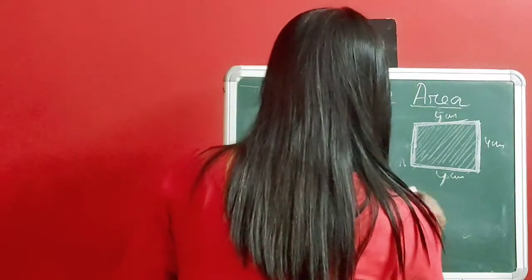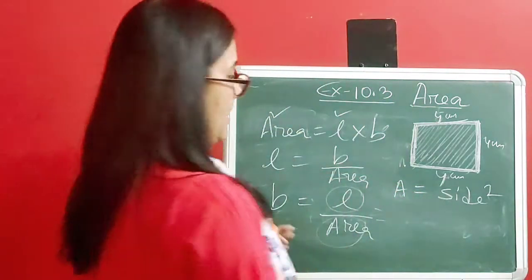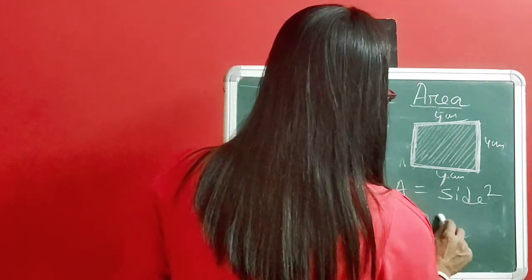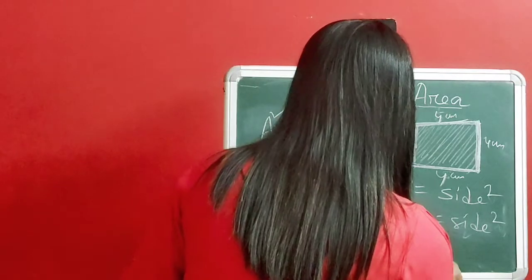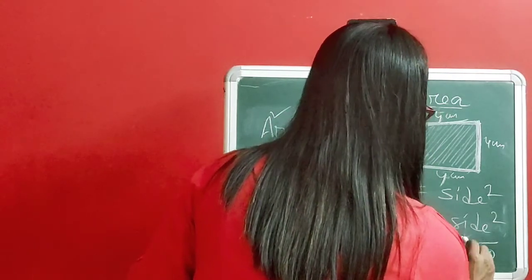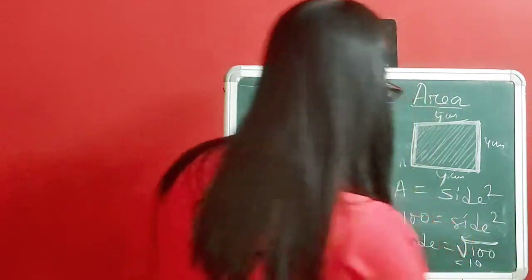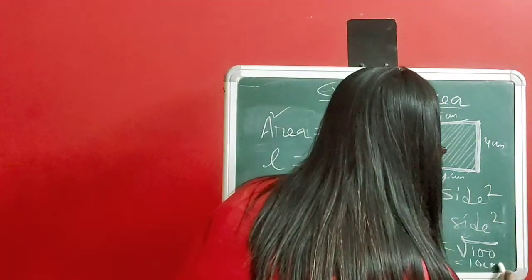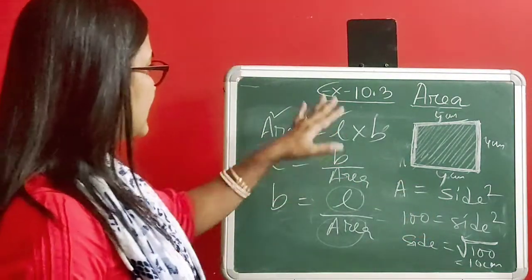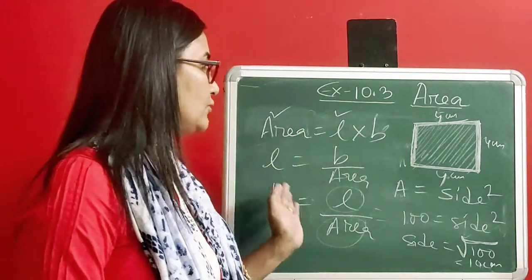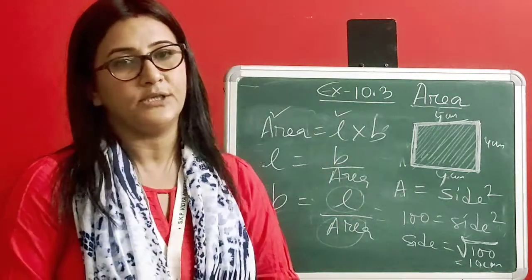In the case of a square, area equals side squared. So if area is given as 100, then side squared equals 100, meaning side equals the square root of 100, which is 10. So 10 cm is the side when the area is 100 cm squared. This is how you find the length, breadth, or side when area is given.